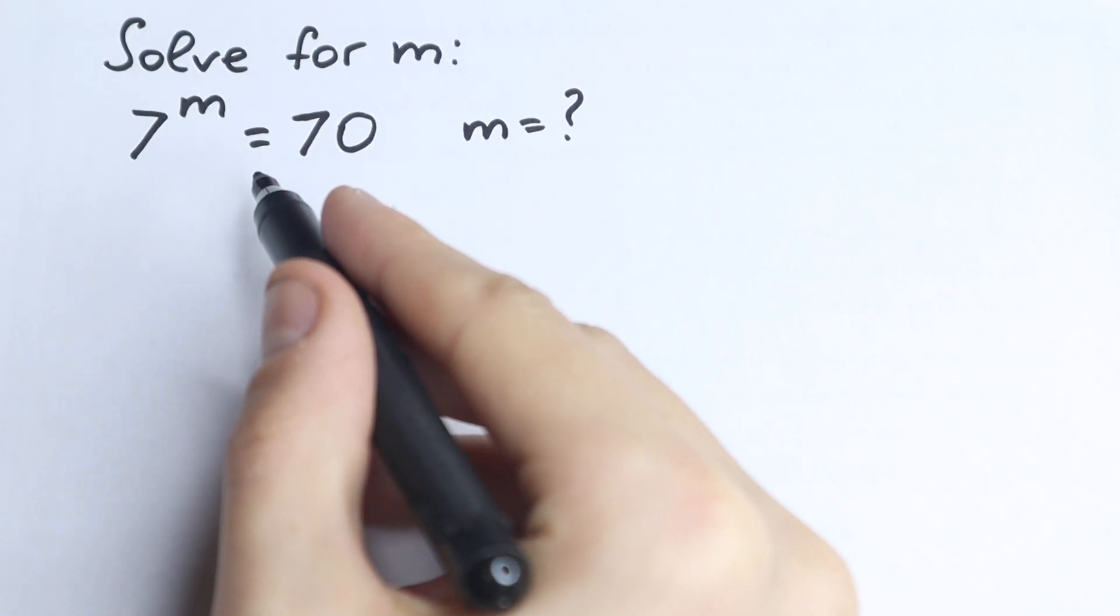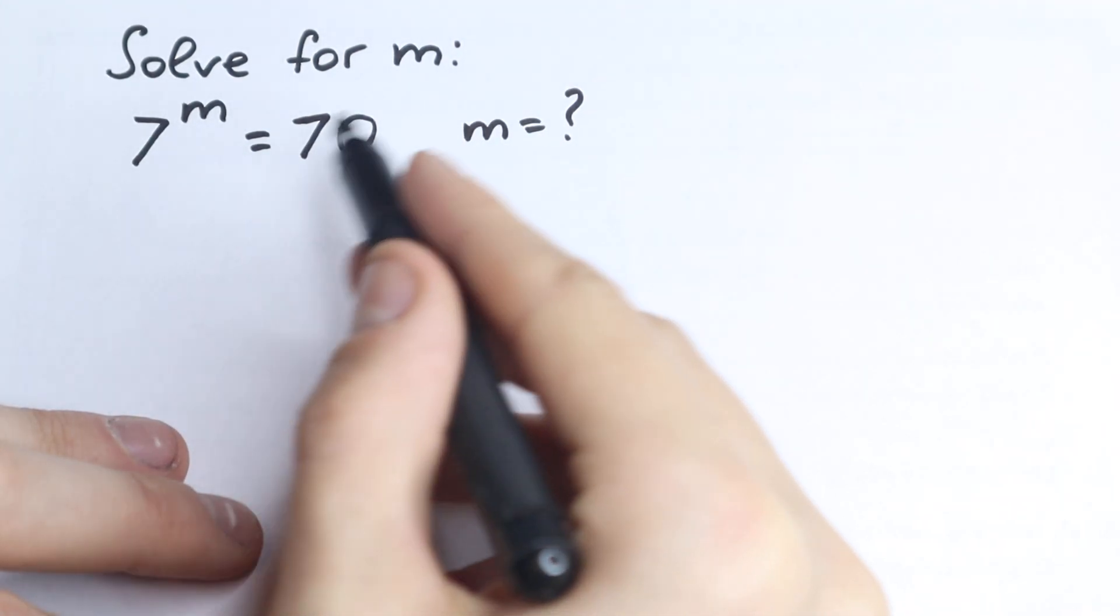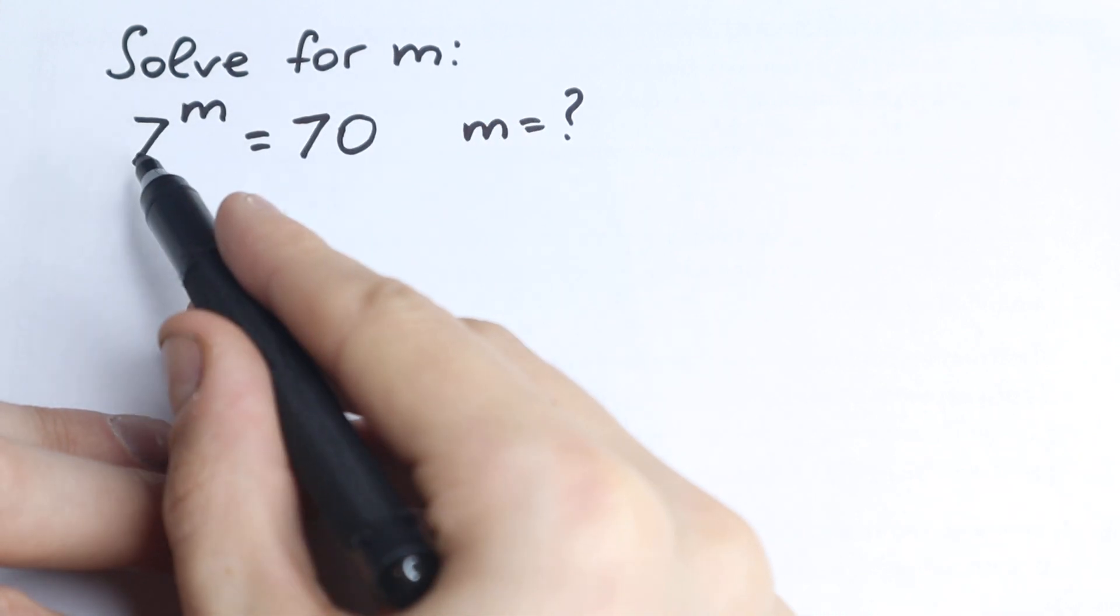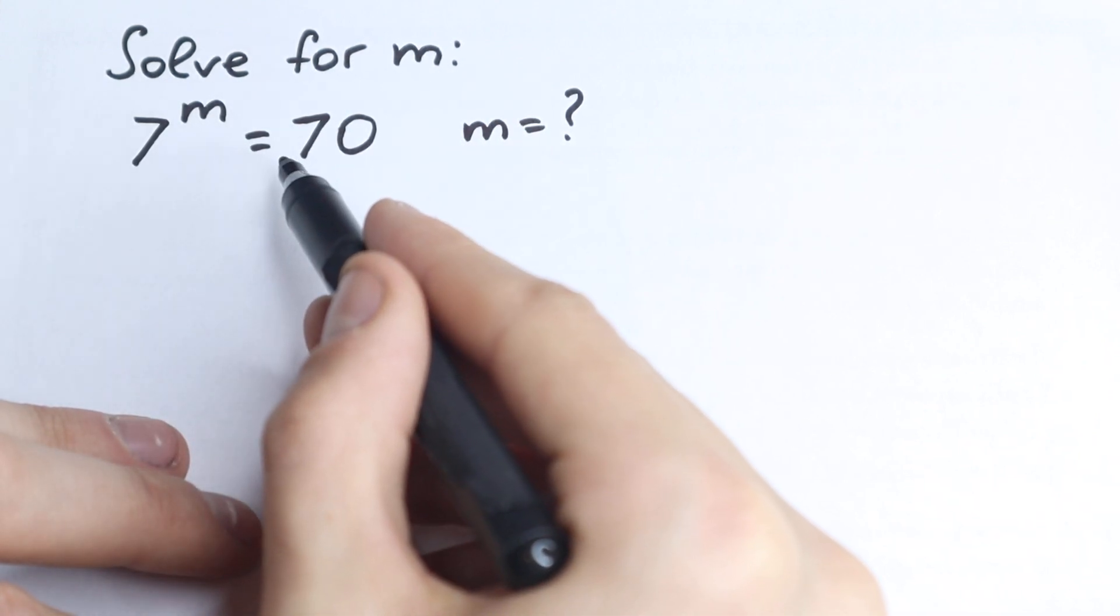Maybe this is a challenge you've seen before, because this is not like a complicated expression with sine, cosine, or square root. We have only 7 to the m equals 70. What is the correct answer?